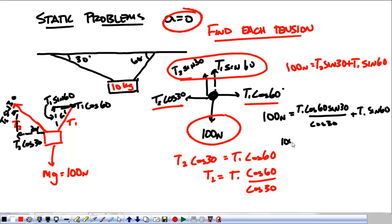T1 cosine 60 times the sine of 30 divided by the cosine of 30 plus T1 sine 60. Now, the easiest thing to do is just turn everything into a number. So, I have 100 equals.